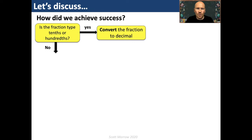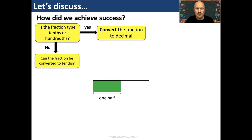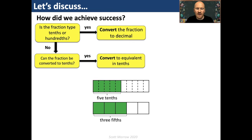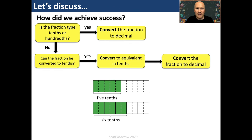But what if the answer is no? Then we ask: can the fraction be converted to tenths? For example, one half — not tenths or hundredths, but it can be converted into five tenths. Similarly, one half and three fifths can both be converted into tenths: one half is the same as five tenths, and three fifths is the same as six tenths. Now we can convert to decimal — five tenths is 0.5, and six tenths is 0.6.